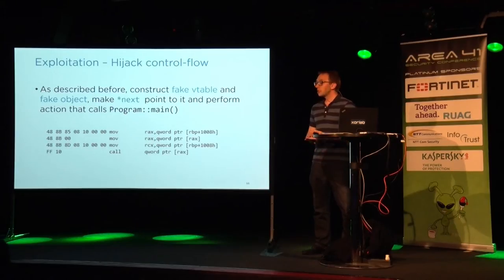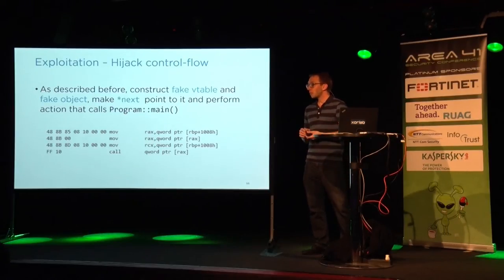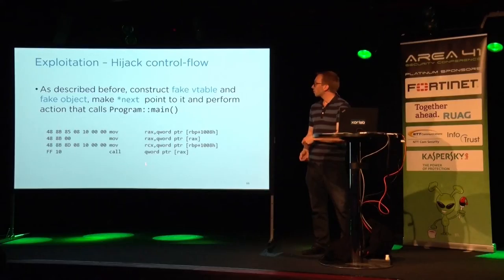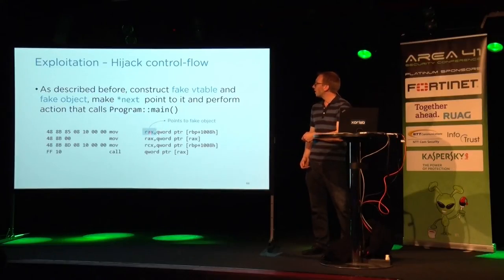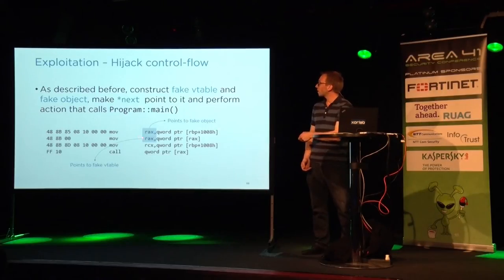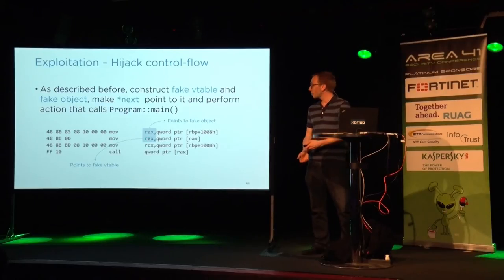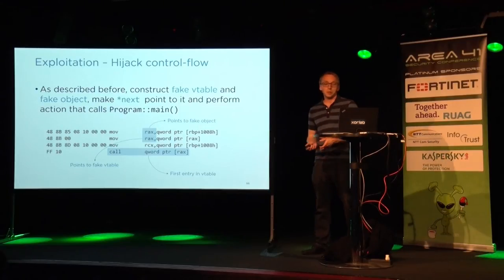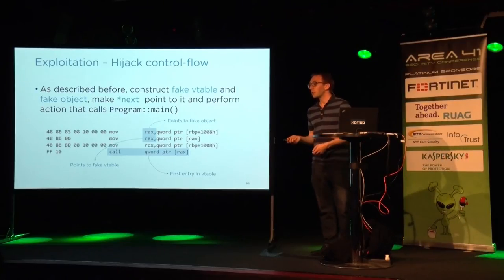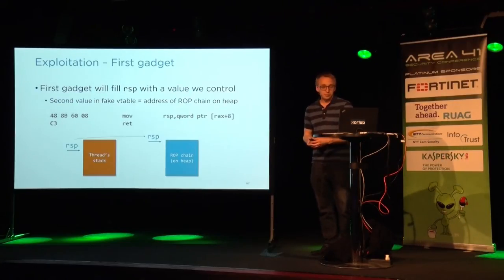How do we actually hijack control flow? This is the call site we want to hijack. If you look closely, this points to our fake object. The fake object's pointer is dereferenced and RCX now points to the V-table. Eventually we call the first entry in the V-table, and control flow gets hijacked.